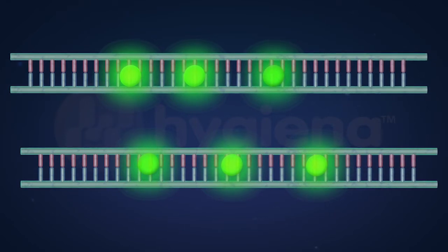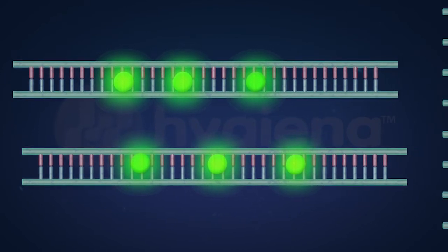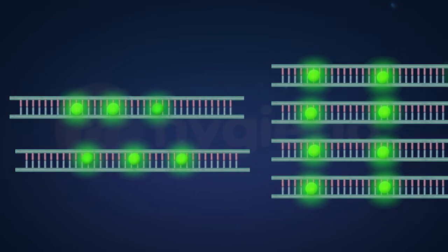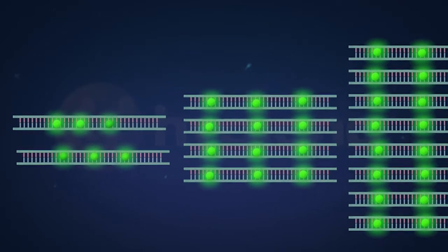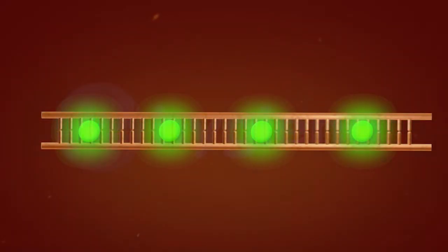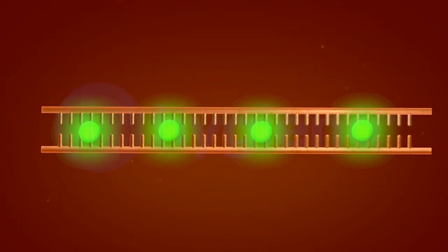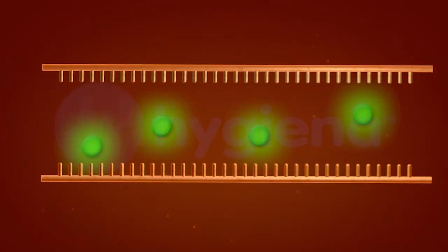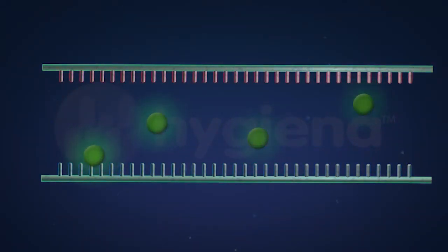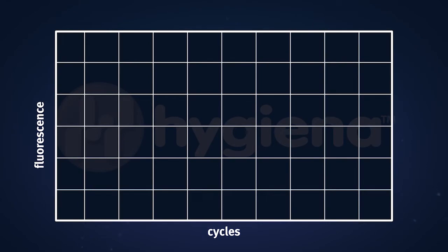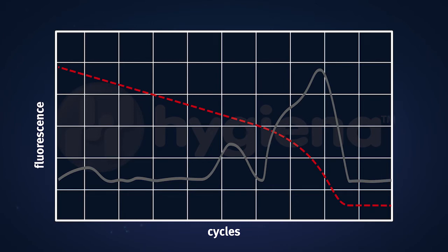With each successive round of heating, binding, and extending, each existing fragment splits to form two new fragments. This creates millions of copies of the target DNA fragments in a very short time. After DNA amplification, the temperature of the samples is raised again to the point where the DNA strands separate. This releases the dye and lowers the fluorescent signal. The Backsystem measures the change in this fluorescent signal, which is used by the Backsystem software to create a melt curve and determine positive or negative results.